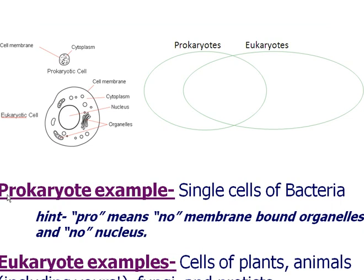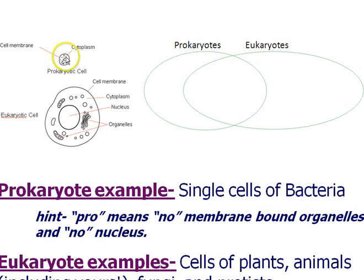Here we have information about the differences between the two cell types we find in nature: prokaryotes and eukaryotes. Prokaryotes are much smaller and simpler in complexity. They don't have much more going on other than having DNA to code for proteins, some ribosomes to make those proteins, and enzymes that carry out life processes. They do have a cell membrane, cell wall for protection, and a cytoplasm, but they're much less complicated than eukaryotic cells.